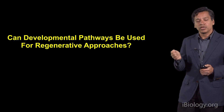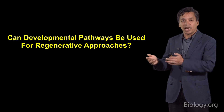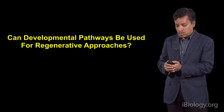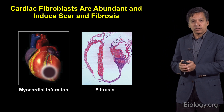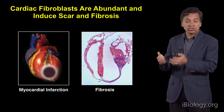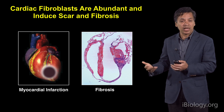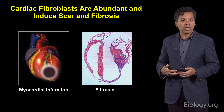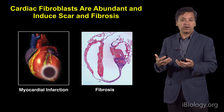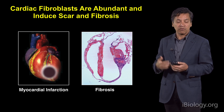Can we use these developmental pathways we've discovered to somehow take an adult heart and create new muscle in a regenerative approach? It turns out that the heart, like most other organs, has not only muscle cells but a number of support cells. In the heart we call them cardiac fibroblasts, but most other organs in your body have support cells around the functioning cells that are there to form the architecture and support those cells necessary for that organ's function.